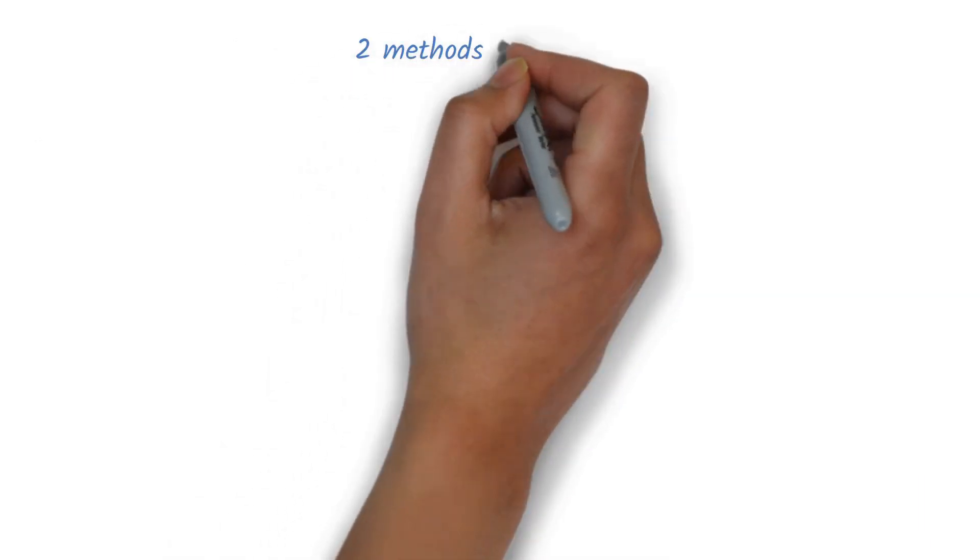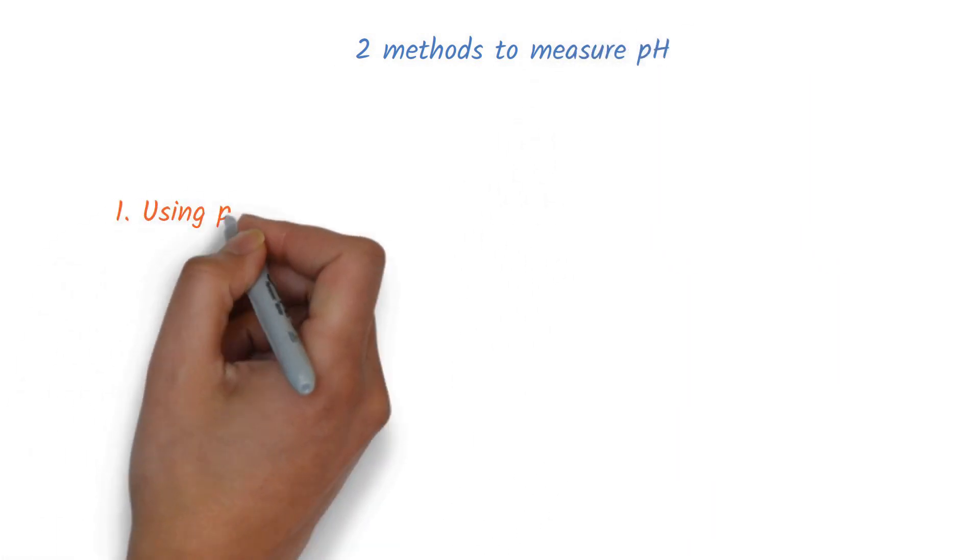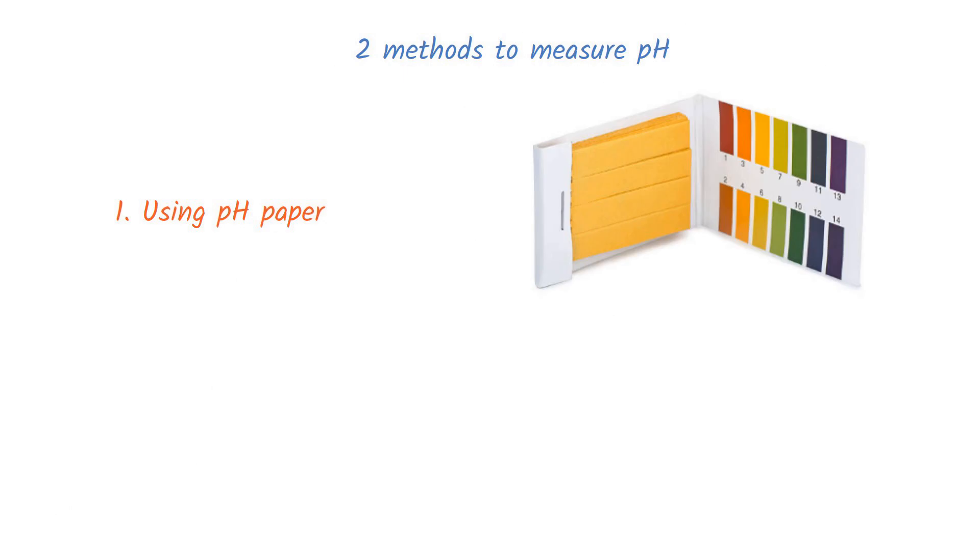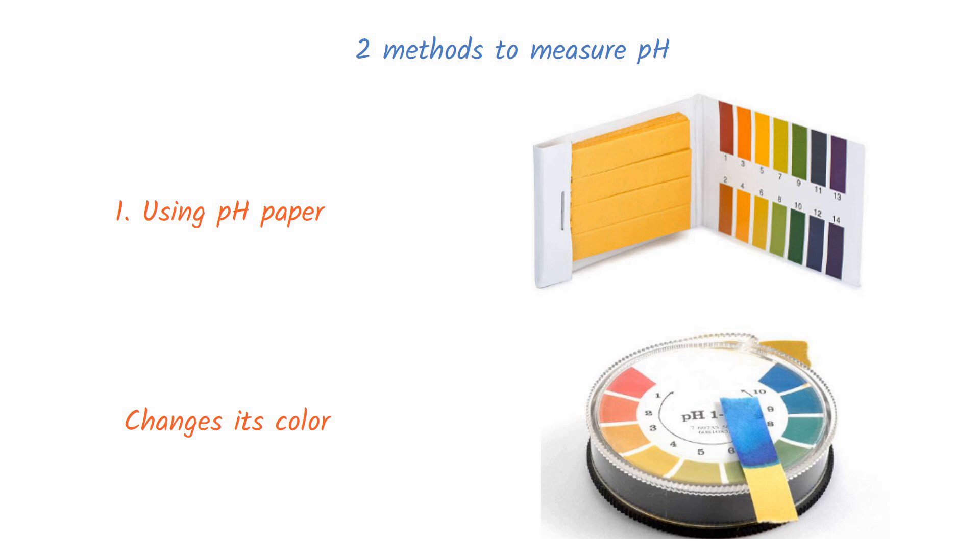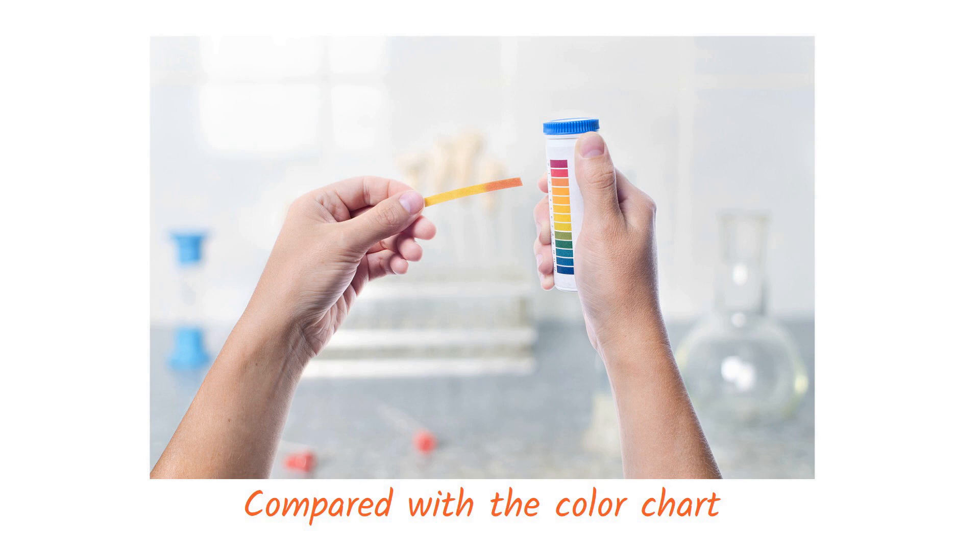There are two methods to measure pH in a microbiology lab. The first one is using pH paper. The pH paper changes its color when it is dipped into a solution. This color change is based on acidity and basicity of the sample solution. Later, the color of the paper will be compared with the color chart provided along with the paper.